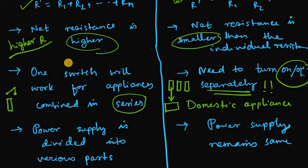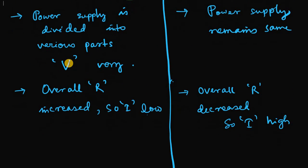Next, in series combination the power supply is actually divided into various parts. Why? Because the V is always varying as we said.